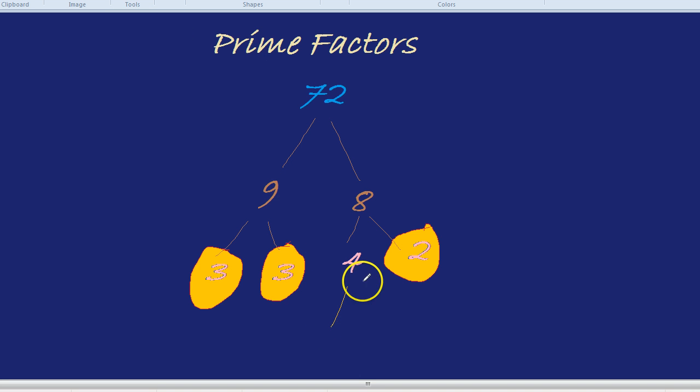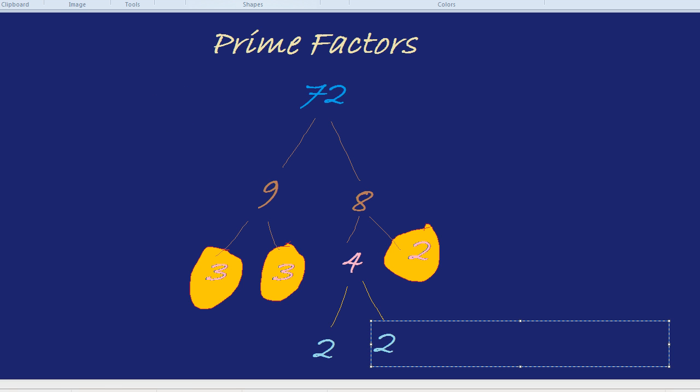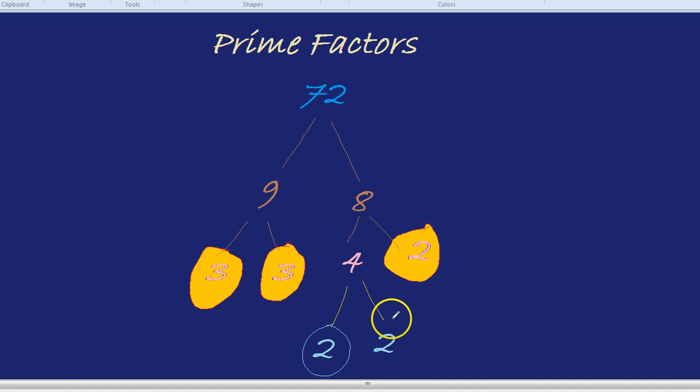We're going to break 4 down into, you guessed it, 2 times by 2. 2 times by 2. We're going to highlight the 2s again because they are prime factors. They're not any old factors. 4 was a factor. 8 was a factor. 9 was a factor. But the ones highlighted are prime factors. And that makes a big difference.